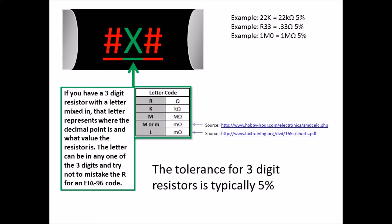The example I give for R is R33, which would be 0.33 ohms. And then a capital K would be kilohms, so the example I give is 22K, which would be 22 kilohms. Capital M typically means megaohm resistor. The example I give is 1M0, so it would be 1 megaohm resistor.